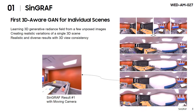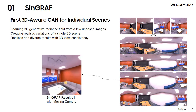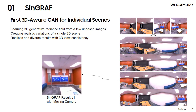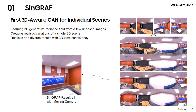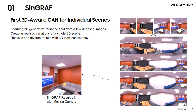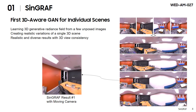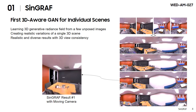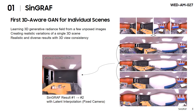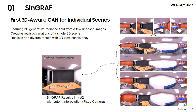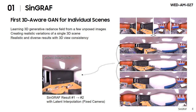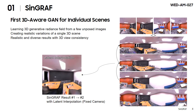Scene Graph is the first 3D-aware GAN for individual scenes, training a 3D generative radiance field from a few unposed images. It creates realistic variations of a single 3D scene, enabling high-quality and diverse results with 3D view consistency.